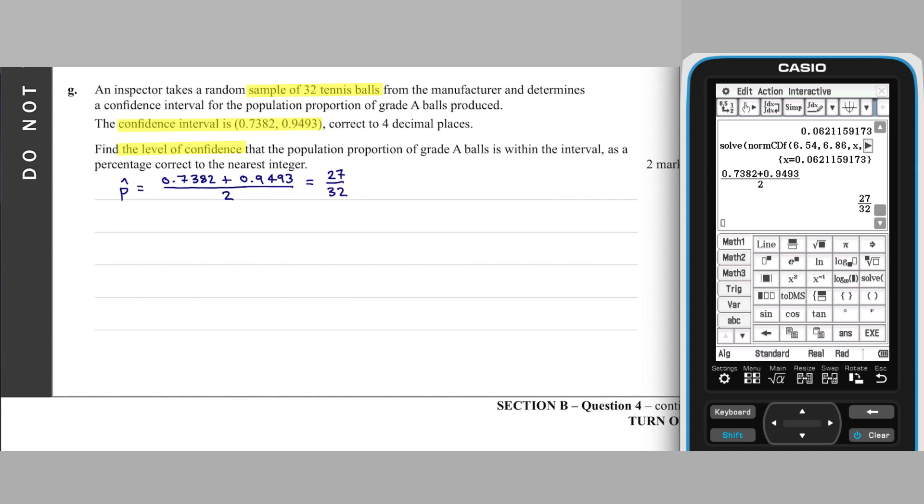Using this value, we can set up an equation for the confidence interval width, which is two times the Z-score by the square root of P-hat by one take P-hat over N, and this is equal to 0.9493 minus 0.7382, which is the width of the given interval.